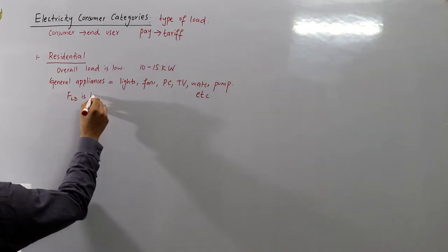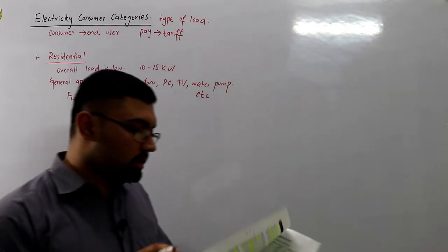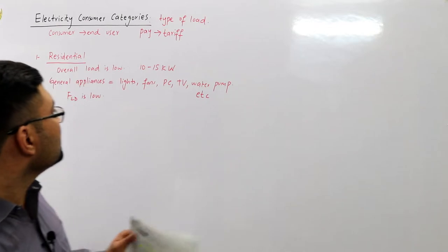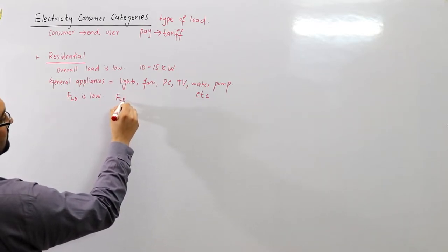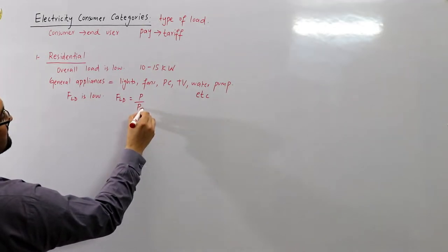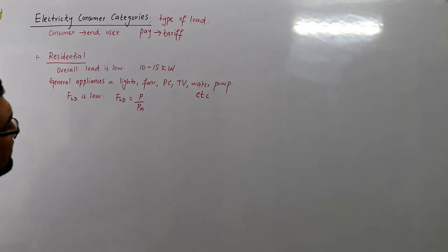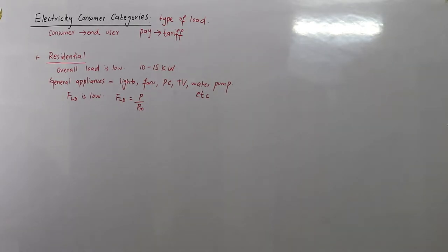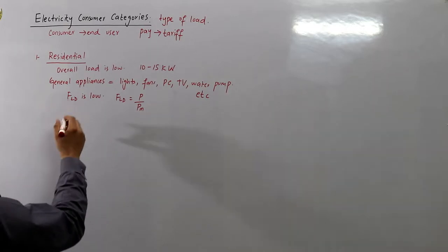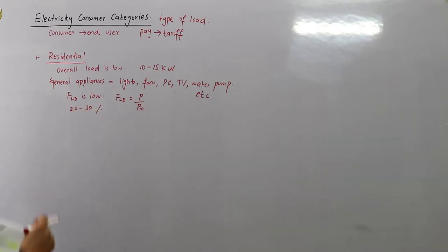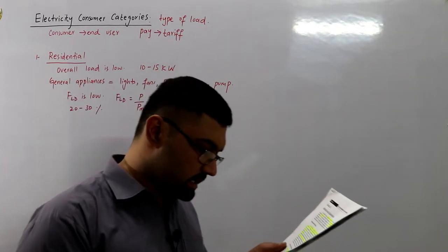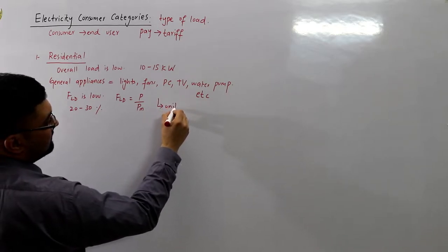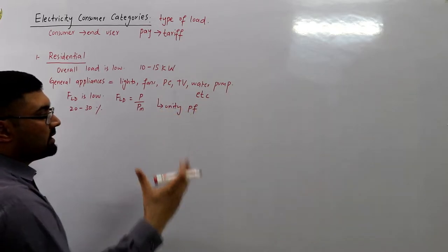The load factor (FLD) for residential consumers is low because most of the load is off. Load factor is average load divided by maximum demand. The book states about 10 to 12 percent, but it's more likely around 20 to 30 percent. Most of these loads operate at unity power factor.